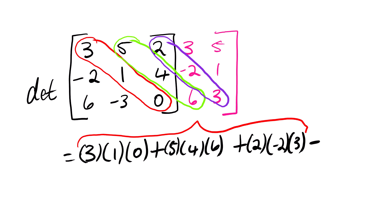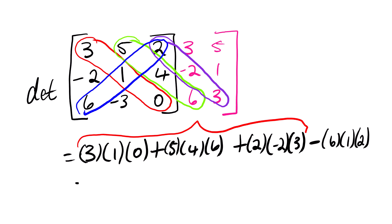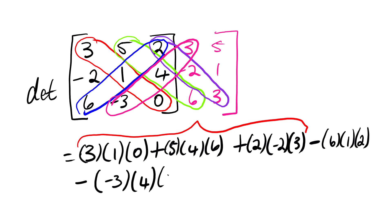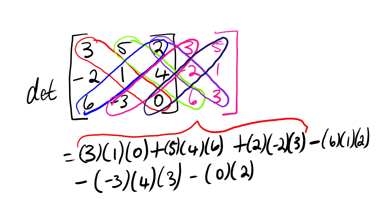Minus the second diagonals: 6, 1, 2; minus negative 3, 4, negative 3, 4, 3; then the last one: 0, 2, 5; minus 0, 2, 5.